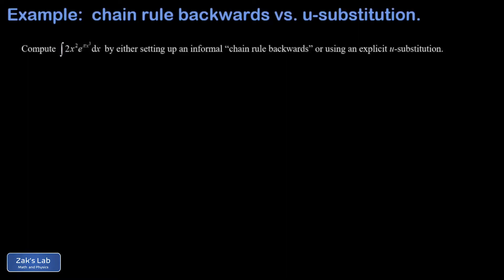In this video we're integrating 2x² times e to the πx³ dx, first by using an informal approach of setting up the chain rule backwards, and then we'll follow it up with a formal u-substitution.